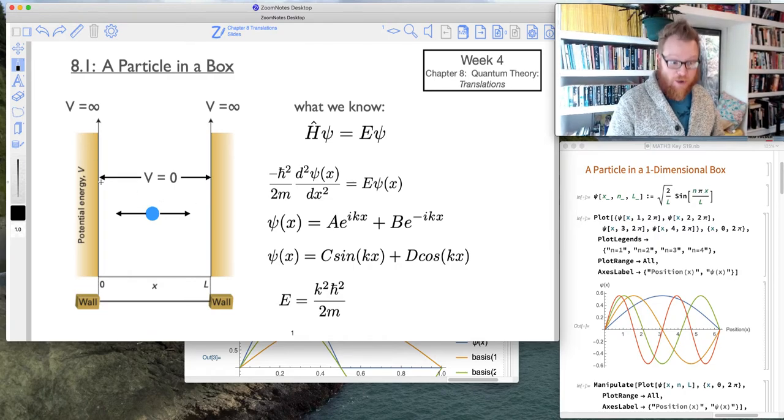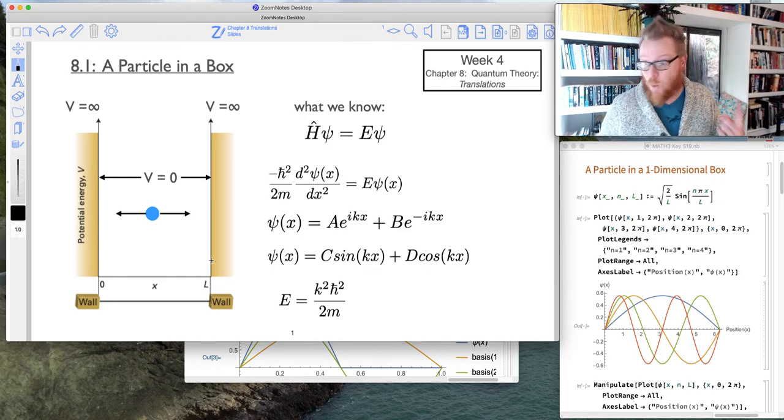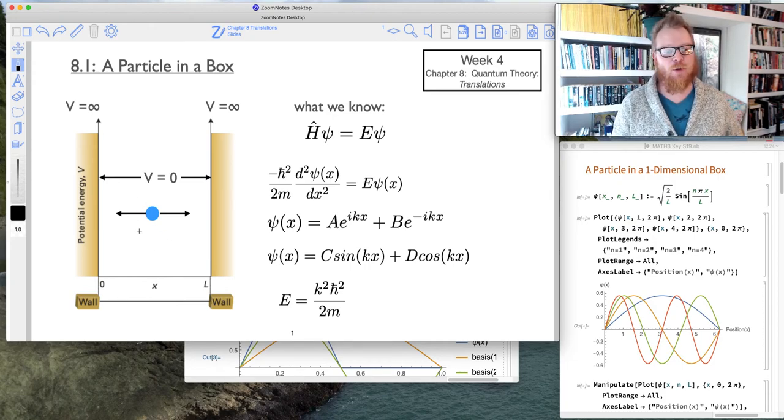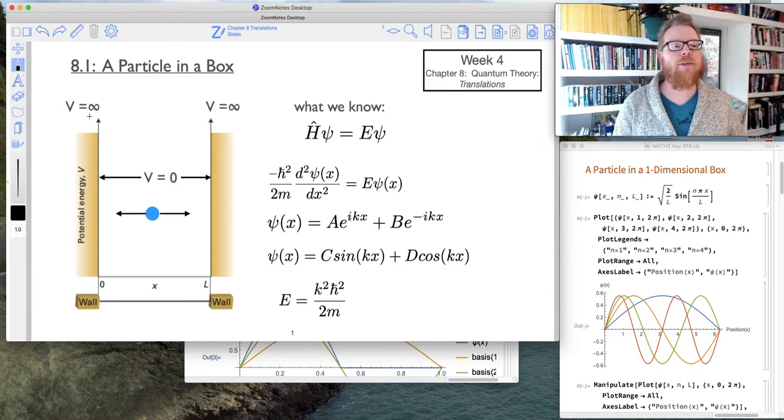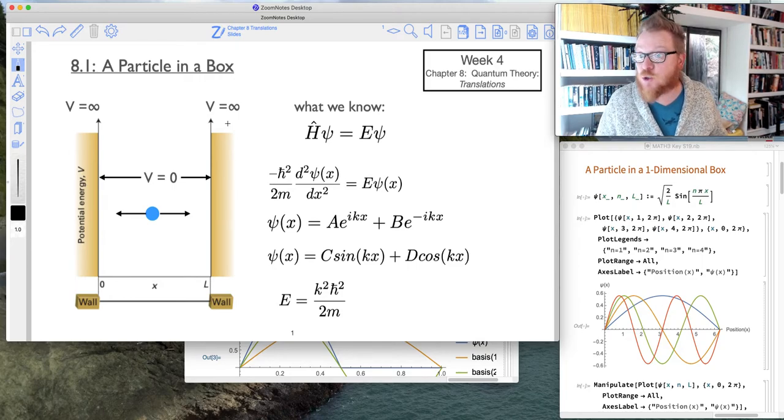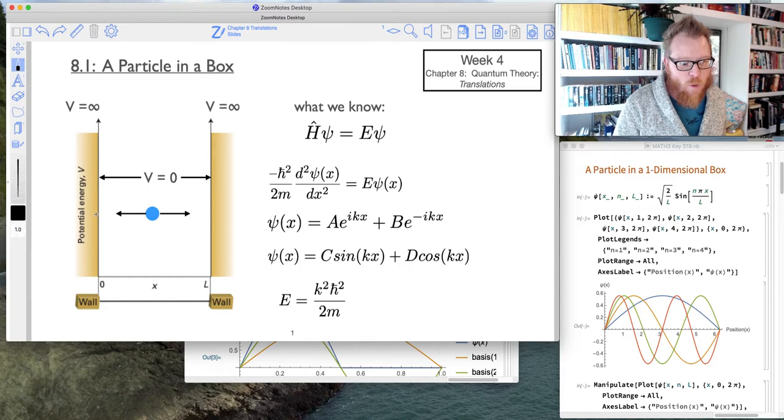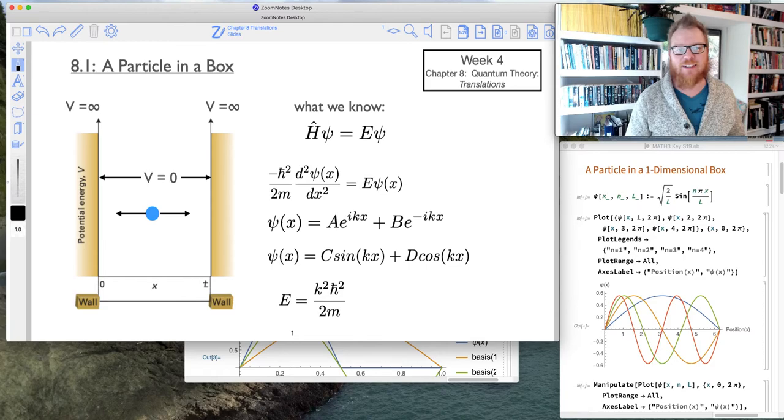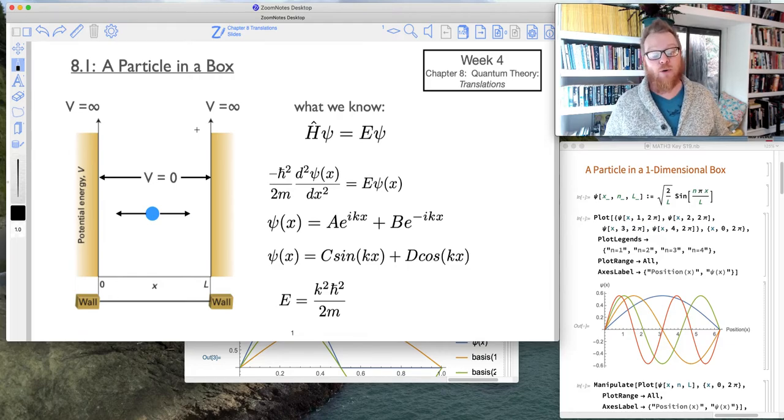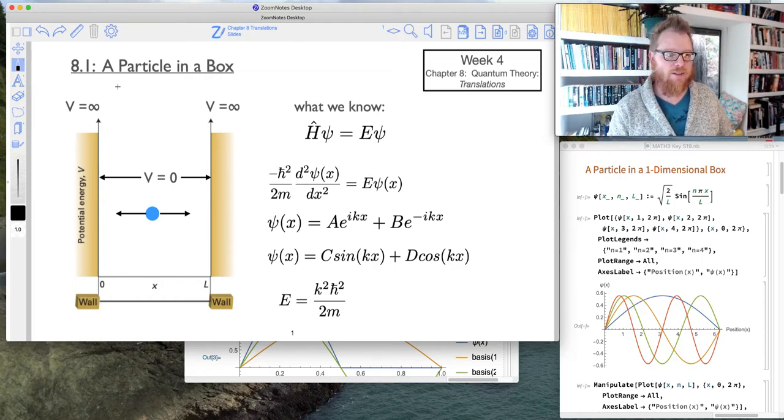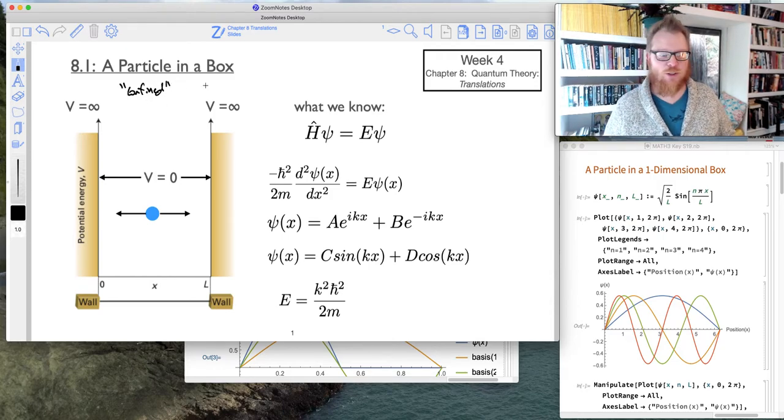So here's our box. We're establishing this is a one-dimensional box. The particle is free to move to the right or to the left. We will say that the potential energy inside the box is zero and the potential energy outside of the box is infinite. So this is also sometimes referred to as an infinite square well - a well that our particle is trapped down in. Because it's infinite potential energy outside of the box, the particle can't escape. So we often will say this particle is confined to the box or the infinite square well.